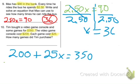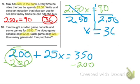So we need to subtract $200 on both sides. These will cancel. Bring everything down. 25X equals 150.